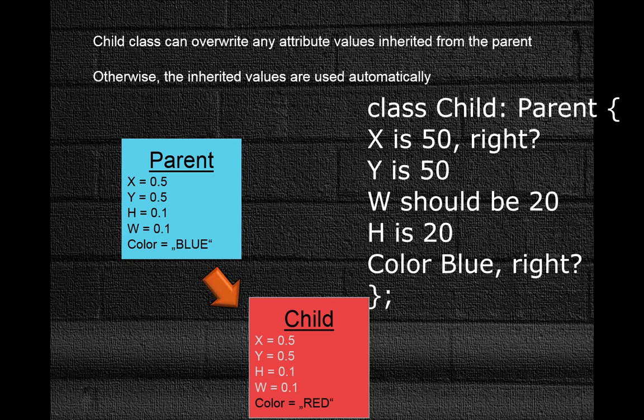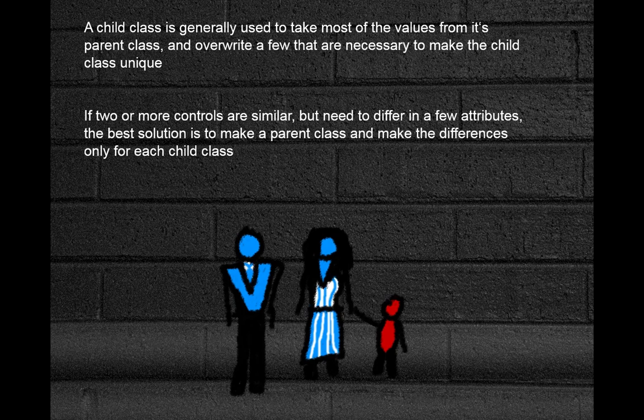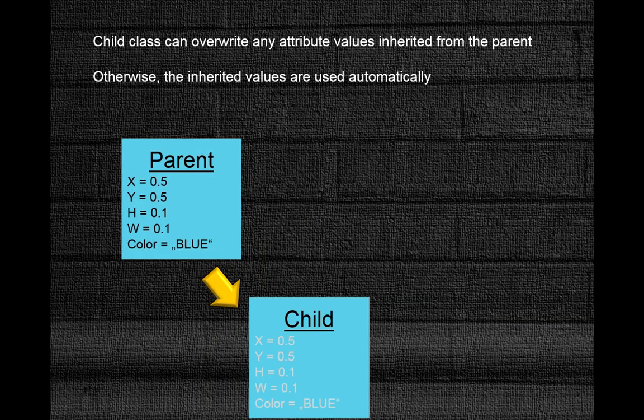These defaults will be applied if we don't change anything. But as we know from real life, a child can resemble its parent but can choose a different path and become a different person. The same logic applies here. If we change any of the attributes of the child, it will overwrite the settings inherited from the parent class for that particular child. So by adding color equals red in the child class, all other attributes remain inherited — coordinates are still 50,50, width and height are both 20 — but the color of the child class has changed to red.